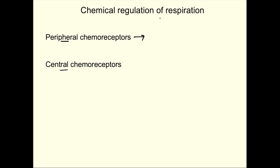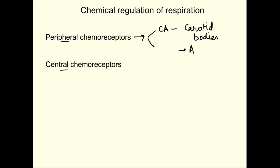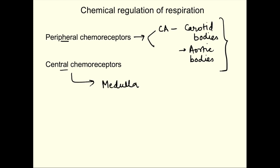Peripheral chemoreceptors are located at two places. At the bifurcation of the carotid artery there are carotid bodies, and above and below the arc of the aorta there are aortic bodies. Both carotid bodies and aortic bodies are peripheral chemoreceptors. Central chemoreceptors are located on the ventral surface of the medulla and are separate from the neural centers of respiration.